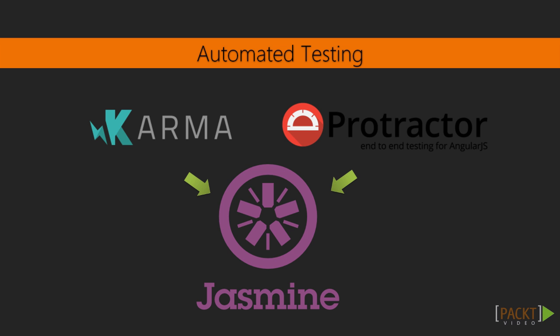AngularJS is compatible with many different tools to deal with unit and end-to-end tests. In this course, however, since we're just starting out, we're going to focus on the tools officially supported by the Angular team. Those tools are called Karma and Protractor, test runners for unit and end-to-end tests respectively. Both tools are compatible with the Jasmine framework. Jasmine is a behavior-driven development framework for tests in JavaScript code. It has a clean, obvious syntax so that you can easily write tests.